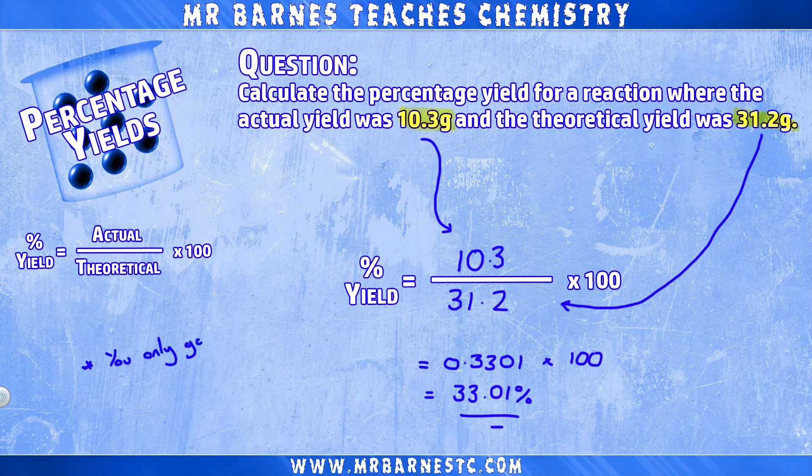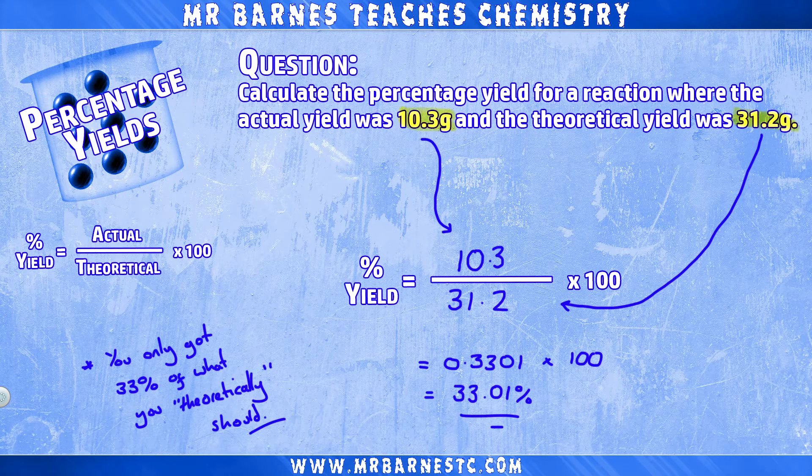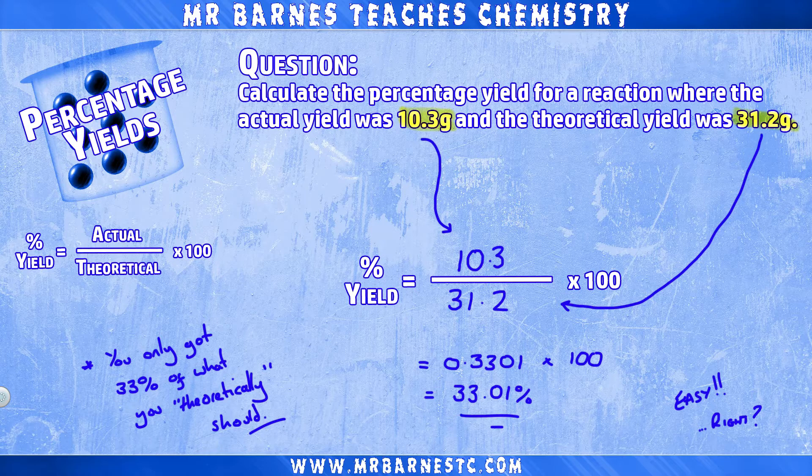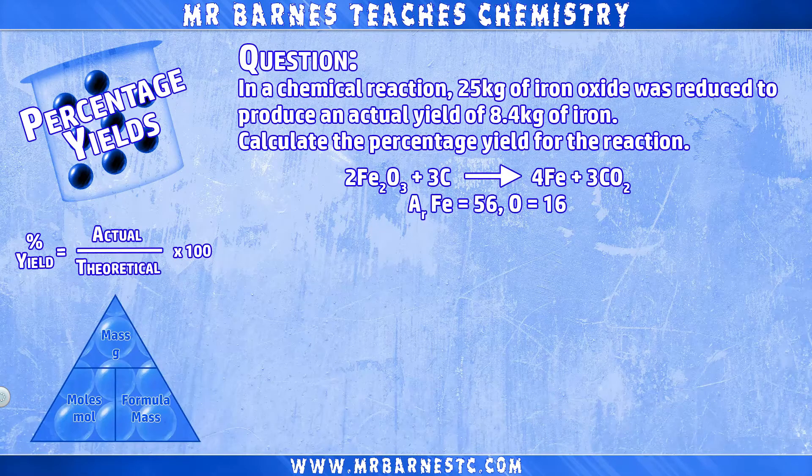Now that means that you only get 33% of what you theoretically should get. So that calculation's easy, right? And technically, yes it is. However, it can be made more complicated when the examiner mixes in theoretical yield calculations with it. As I said earlier, that's the maximum mass calculations which you will have done before. So let's see a more complicated question.